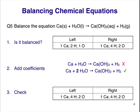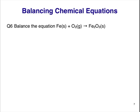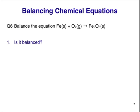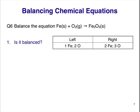A final check: we have 1 Ca on the left and right, 4 H on the left and right, and 2 O on the left and right. This one looked trickier than it was. Question 6. Balance the equation Fe plus O2 making Fe2O3, iron 3 oxide. We have 1 Fe on the left and 2 on the right, and 2 O atoms on the left and 3 on the right, so the equation is not balanced. Both Fe and O are unbalanced.